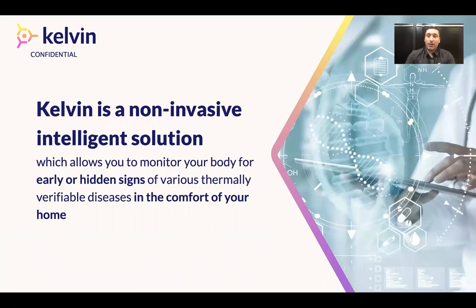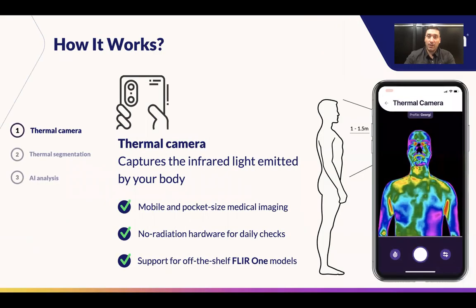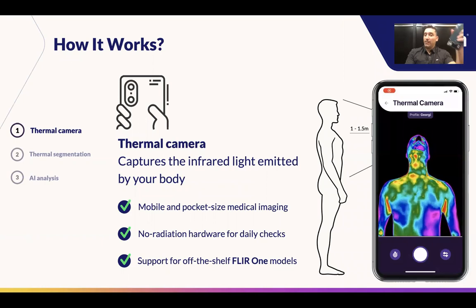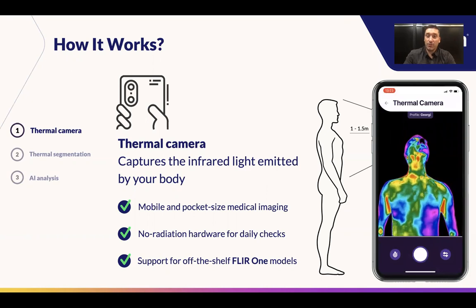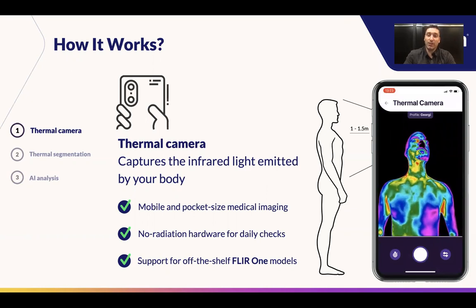Kelvin enables various types of conditions — what we can call thermally verifiable conditions — to be spotted in the comfort of your home. So how it works: it applies a thermal camera to your mobile phone, where you can take a photo of yourself from a short distance,